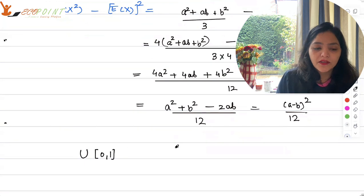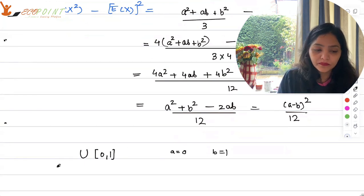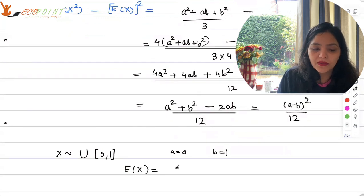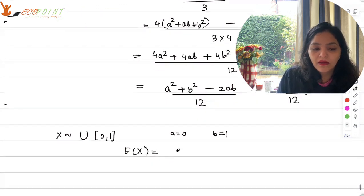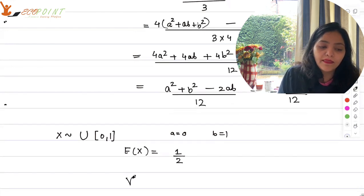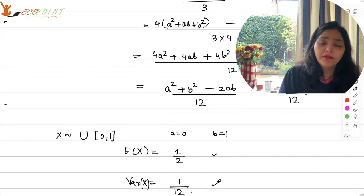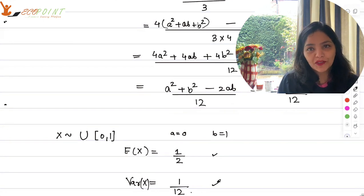Uniform 0, 1. So which basically means that you are taking a as 0 and b as 1. In that case when x is uniformly distributed in the interval 0, 1, the expected value simply becomes a plus b that is 1 upon 2. So half. And the variance becomes b minus a or a minus b square that is 1 upon 12. So these are some things that you should always remember about the uniform distribution.